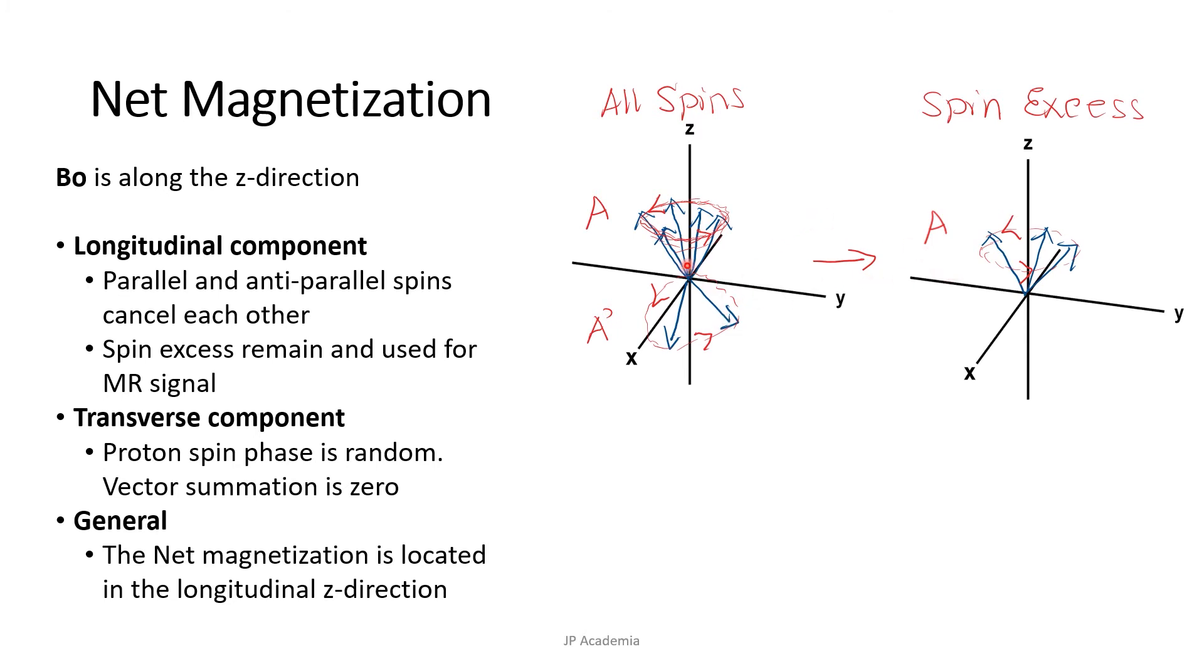At a certain moment, a proton pointing in one direction, let's say we have this A here, and another proton pointing exactly opposite direction, A prime. These opposing directions cancel each other out. Given that there are more protons pointing up than down, we are left with some protons pointing up, which is the spin excess, as illustrated here.